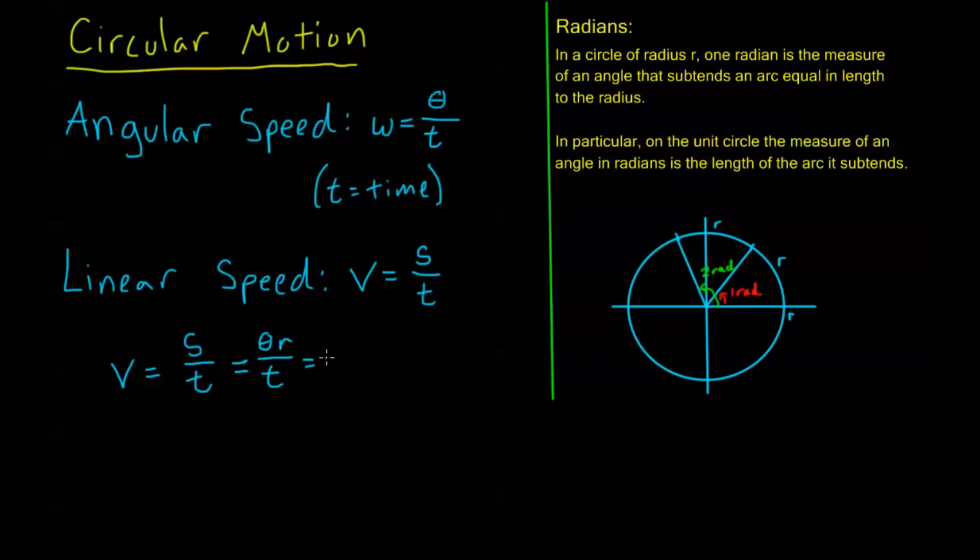Well, I can just kind of put this R on the side, right? And put this R out in front. And I know that theta over T, well, this is my angular speed, isn't it? My angular speed is defined as the change in theta over T. So, this is the same as R times my angular speed.